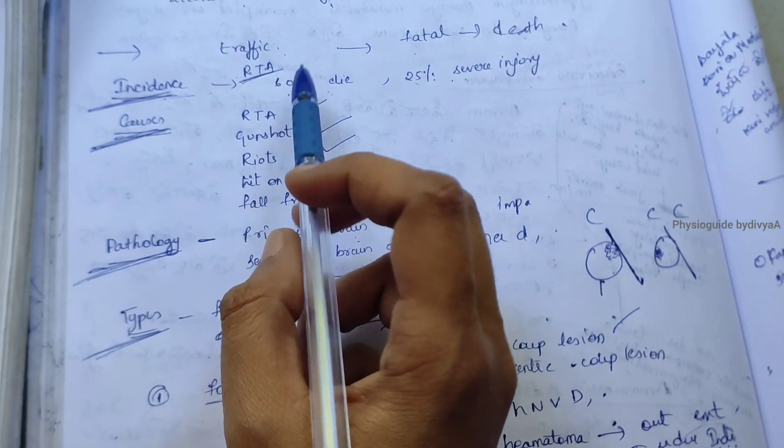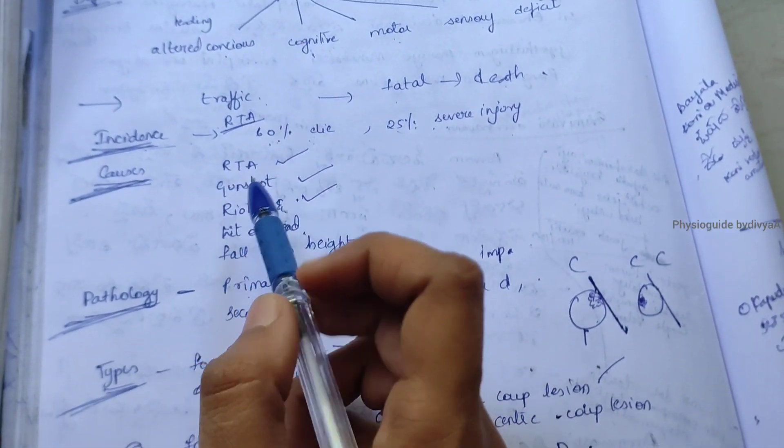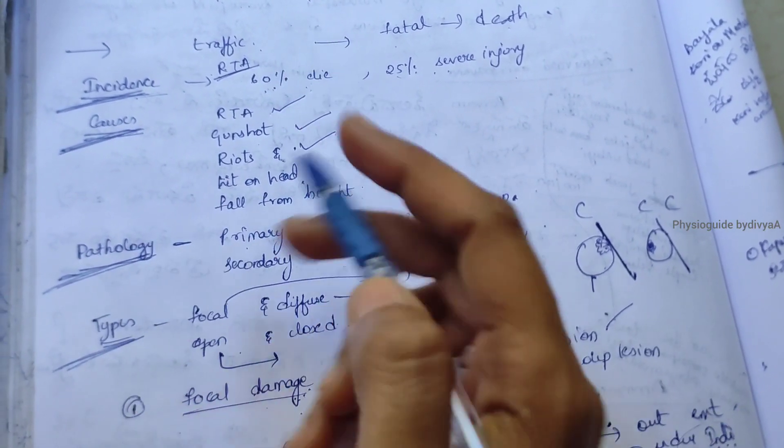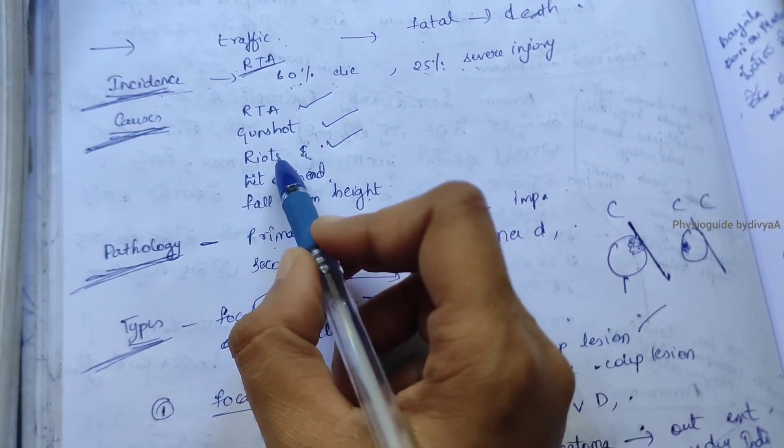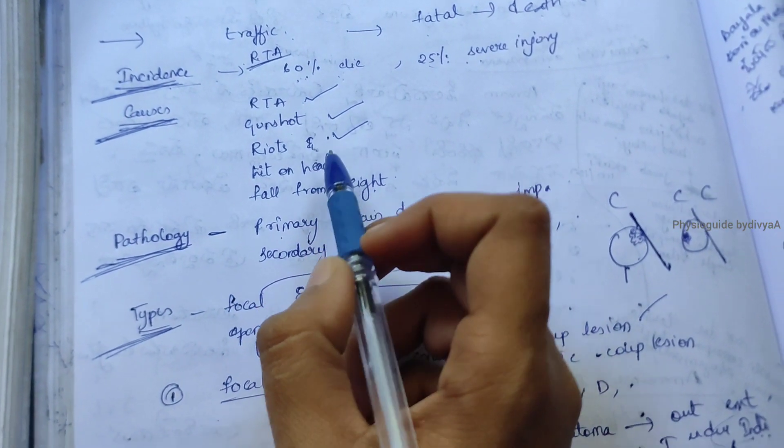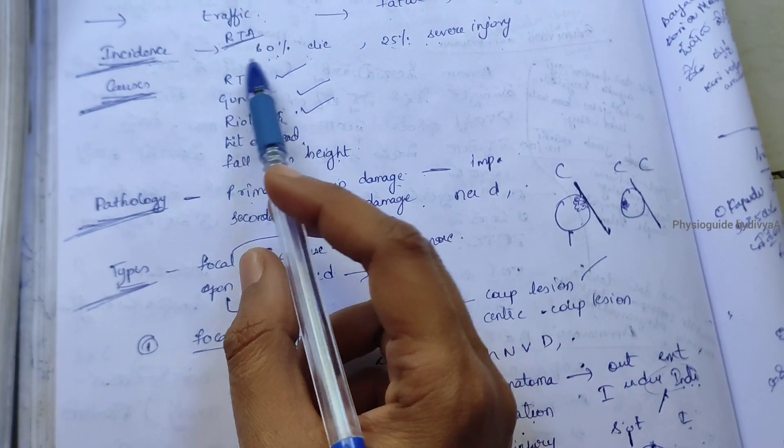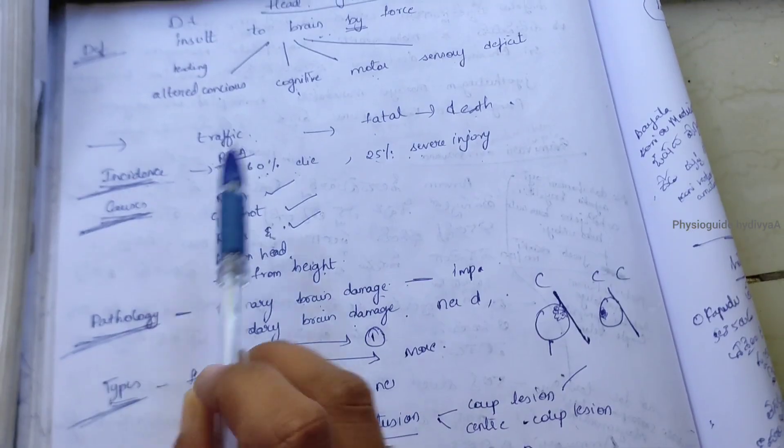Next, causes - how do these head injuries occur? Due to road accidents, gunshot, riots where people in crowds engage in violence, hit on head, fall from height - these are all causes of head injury.